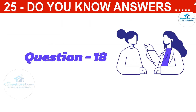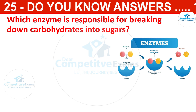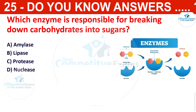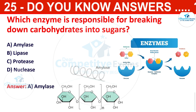Which enzyme is responsible for breaking down carbohydrates into sugars? The correct answer is amylase. Amylase is an enzyme that breaks down complex carbohydrates into simpler sugars like glucose.